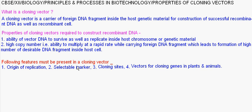What is the role of origin of replication? It is the site which helps in starting DNA replication, as DNA polymerase recognizes this site. So a cloning vector must contain an origin of replication, and the desirable DNA fragment must be attached adjacent to this origin of replication so that, along with the vector DNA, the foreign desirable fragment can also multiply within the host cell.